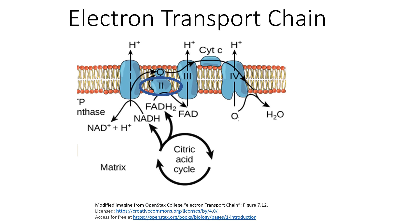In doing so, it turns FAD — which is very similar to NAD+ — into FADH2, which is very similar to NADH. This FADH2 molecule exists within complex two, and then coenzyme Q comes over and oxidizes FADH2 back into FAD.